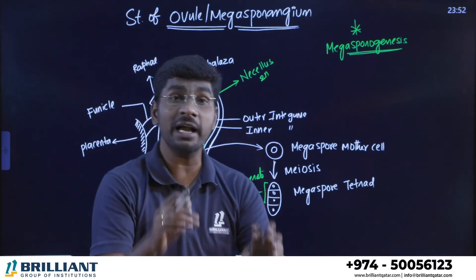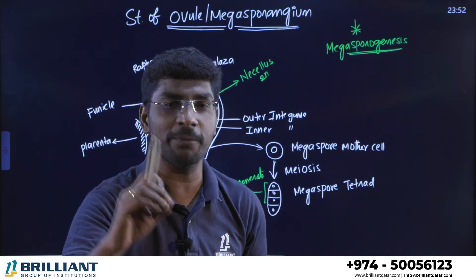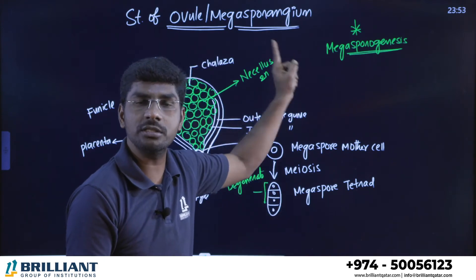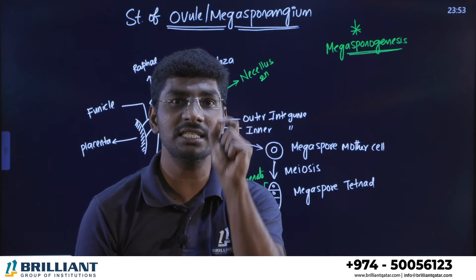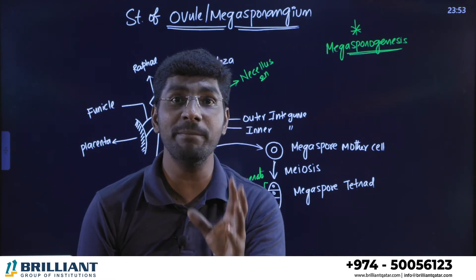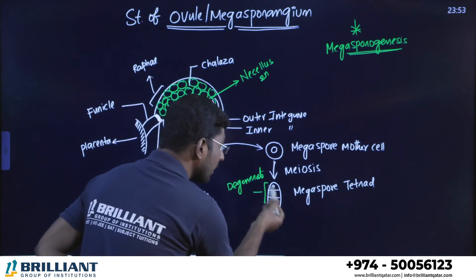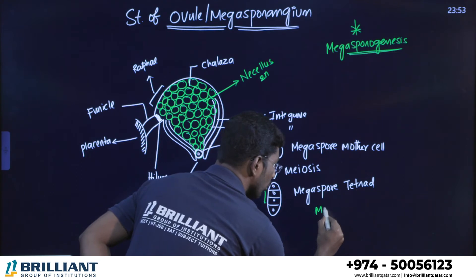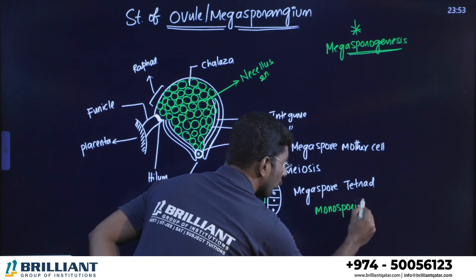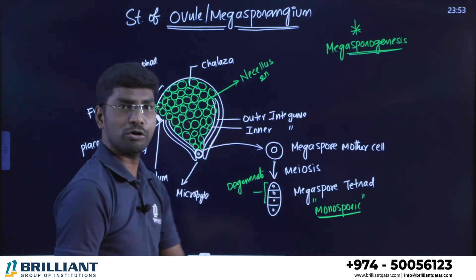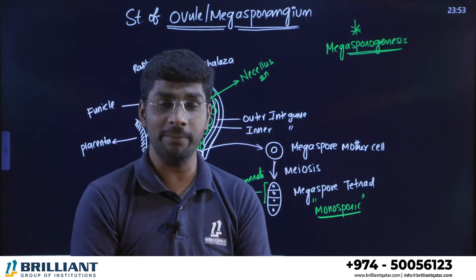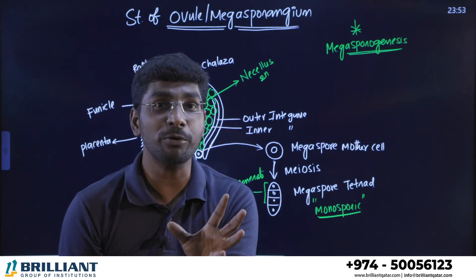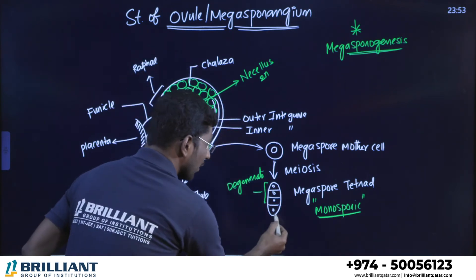Compare this with microsporogenesis: in microsporogenesis, all four haploid cells become microspores and pollen grains. But in megasporogenesis, out of four cells, three degenerate and only one haploid cell goes on to form the embryo sac. This development from only one cell is called monosporic development.